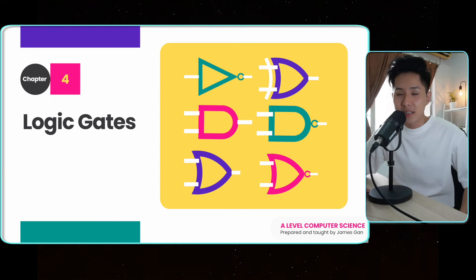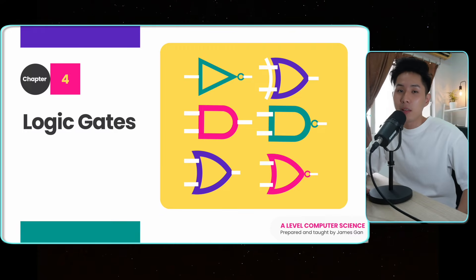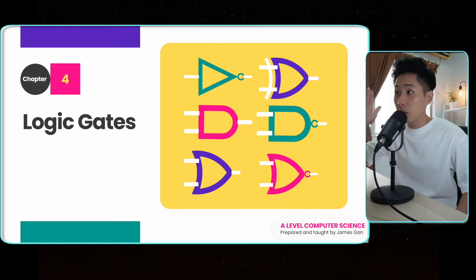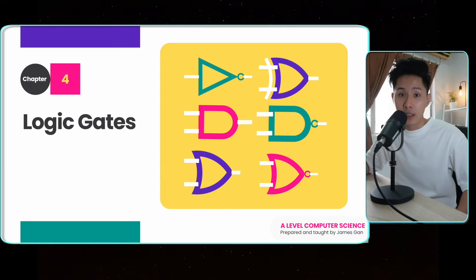Hello everyone, welcome back to this series of A-level computer science. My name is James, I'm a computer science graduate turned teacher, and in this video we're going to look into chapter 4, Logic Gates.